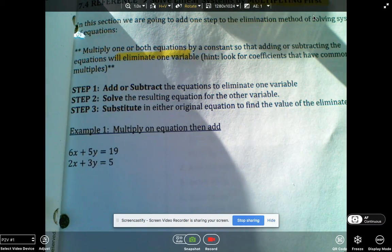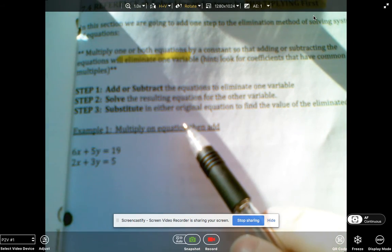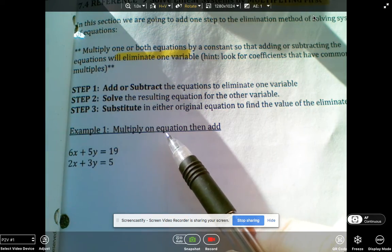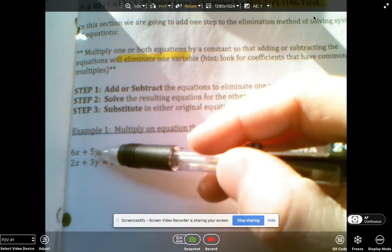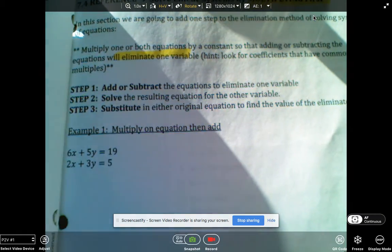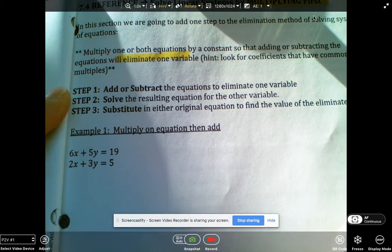If you look at this example here, the first one, it says multiply one of the equations and then add. So which equation would you multiply to get either the x terms or the y terms to eliminate? Yeah, I was thinking of multiplying the second one by 3.